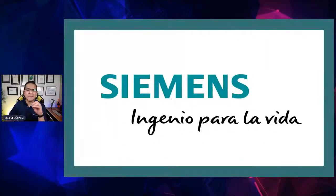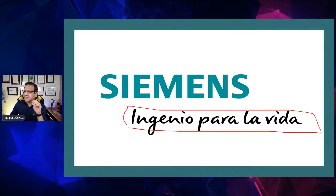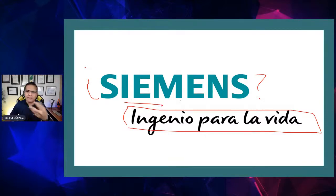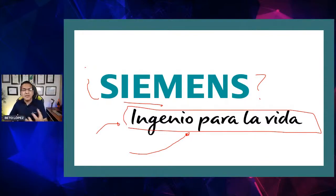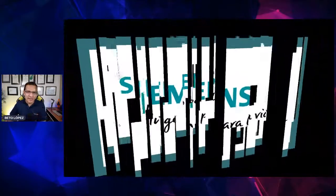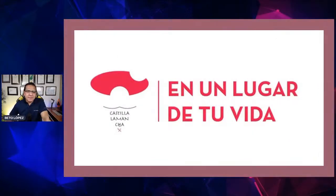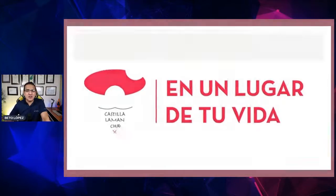Por ejemplo, Siemens: 'Ingenio para la vida'. Si alguien no conoce la marca Siemens y no sabe qué es, no se va a enterar por ese texto, porque no es descriptivo. El descriptivo diría 'Siemens: hacemos lavadoras o televisores'. 'Ingenio para la vida' se conoce como Claim porque potencializa la marca y provoca lo que llamamos excitación de marca, lo que lleva a explorar de qué trata. Castilla: 'En un lugar de tu vida', no describe sino que potencializa.